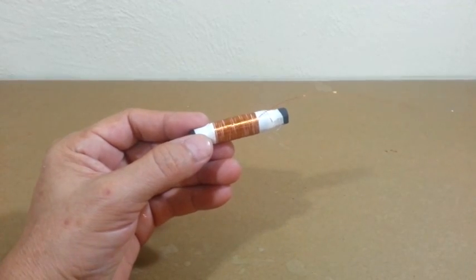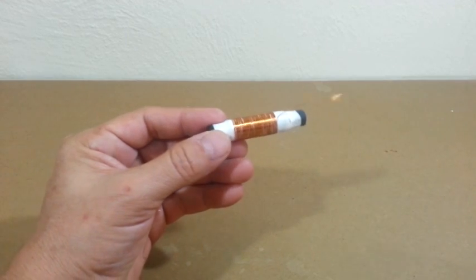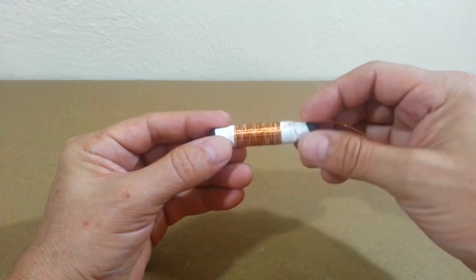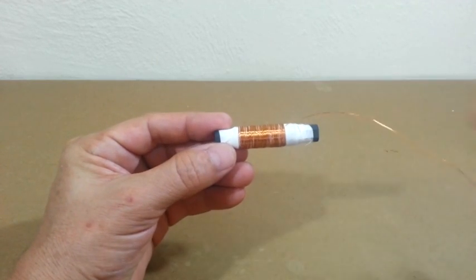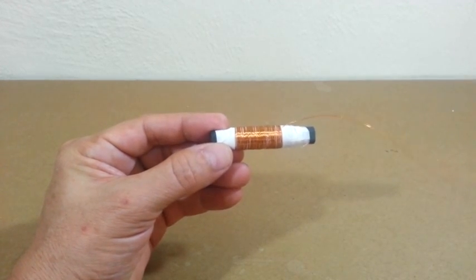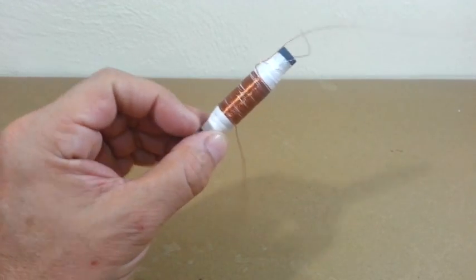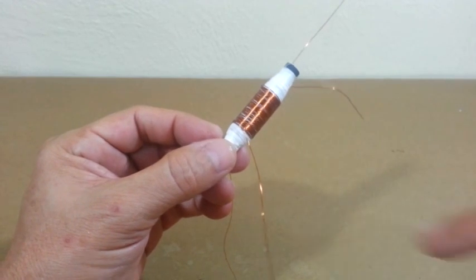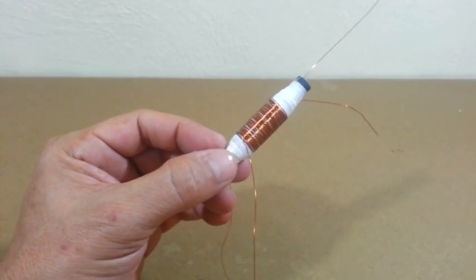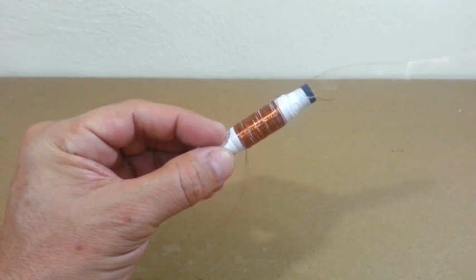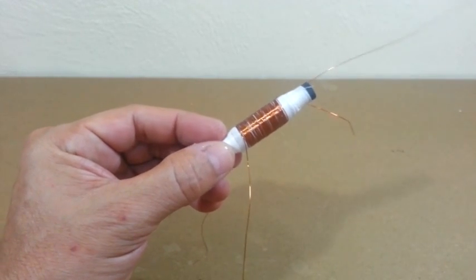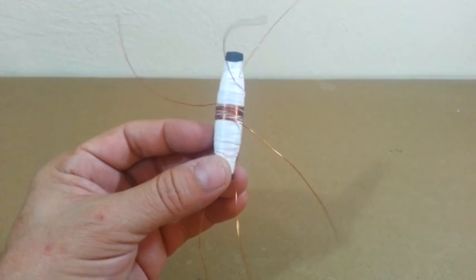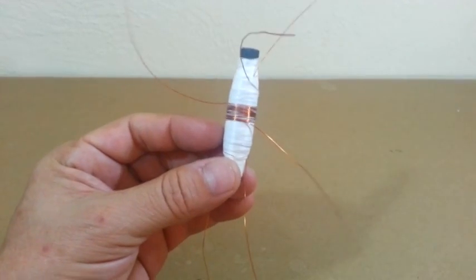We now need to wind the primary coil. So put more tape and wind 60 turns of magnet wire size 28 AWG. The transformer is ready. You can put more tape to protect the feedback coil.